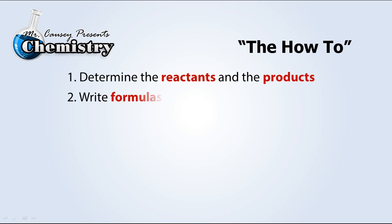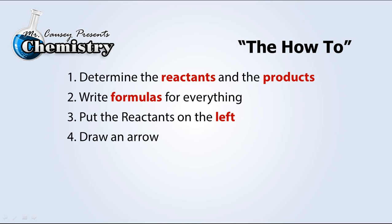Let's review how to write chemical equations. Determine the reactants and the products. Write formulas for everything. Put the reactants on the left. Draw an arrow and put the products on the right. Then balance.